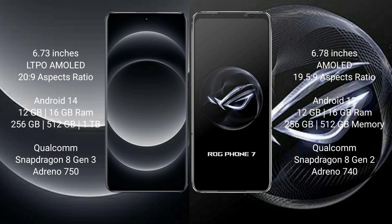The Xiaomi 14 Ultra runs on the Android 14 operating system, while the ASUS ROG Phone 7 runs on the Android 13 operating system. The Xiaomi 14 Ultra comes with 12GB and 16GB RAM options and 256GB storage.